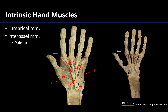To see the palmar interossei muscles you have to reflect the lumbricals out of the way and truly get to the bone. As the name would suggest, they are between the bones. We are only going to look at the palmar interossei — you can see the three palmar interossei here, associated with the second, fourth, and fifth digits. Palmar interossei will adduct the digits, bringing them back towards the third digit, which is the plane by which abduction and adduction occurs.